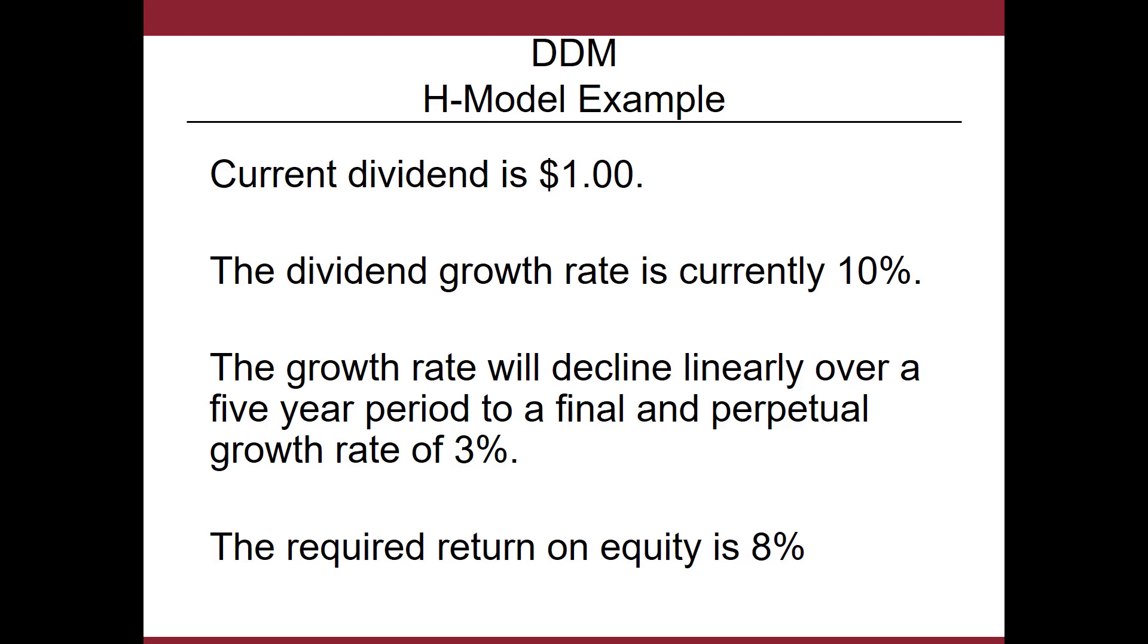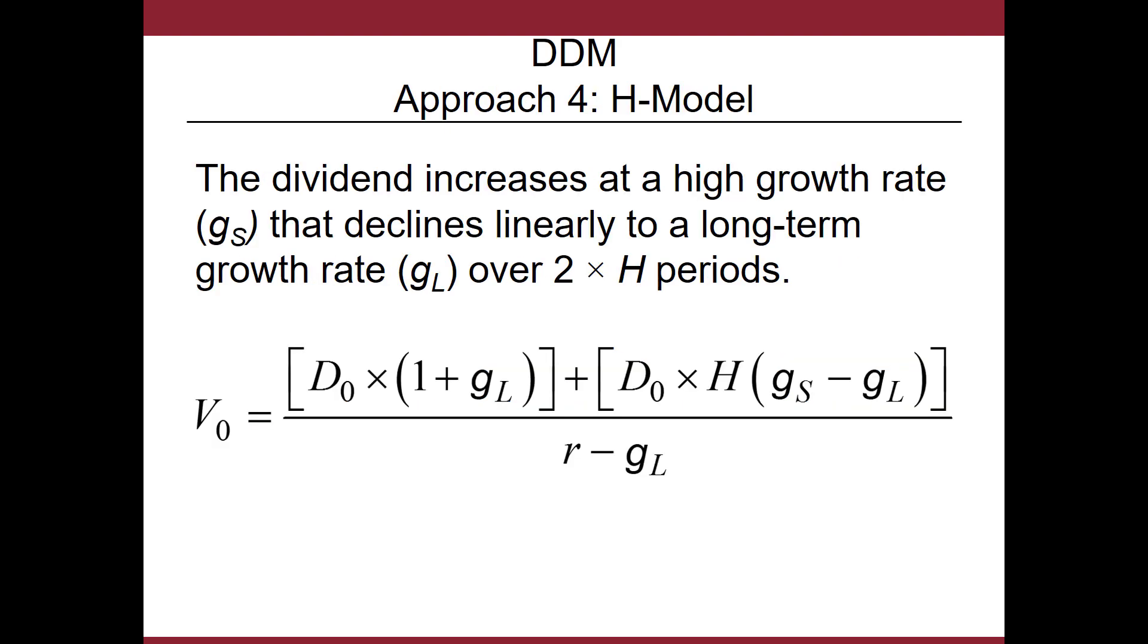And whenever you see this description of a linear decline in a growth rate, I hope that you'll think immediately of this H model. And the H stands for half-life, which the half-life in this case is going to be half of the five year period, or it's going to be 2.5%. So what is the formula for this H model?